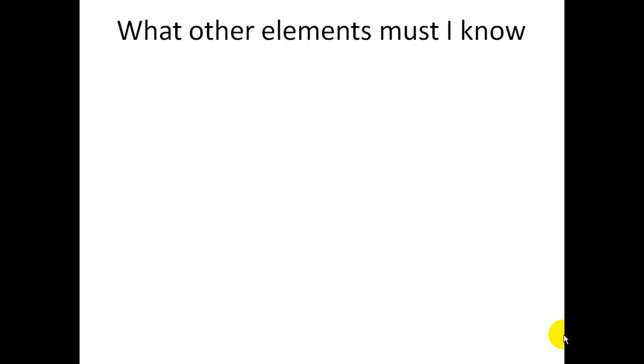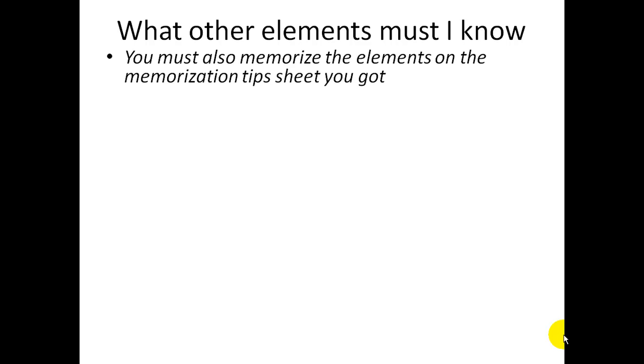There are other elements you must know. And you will get a memorization tip sheet in the next class. But these are the other ones also. You will have a quiz coming up on memorizing the elements. Here are the other elements you must know. Silver is AG, gold, AU.